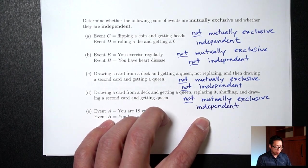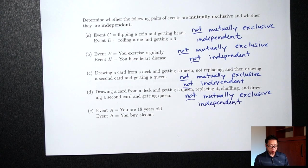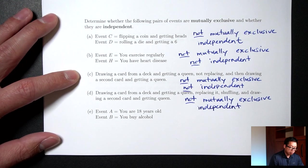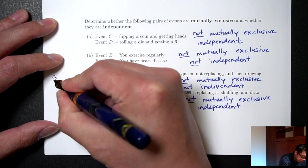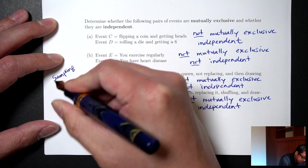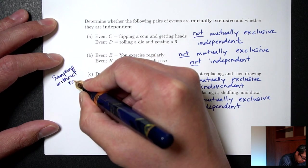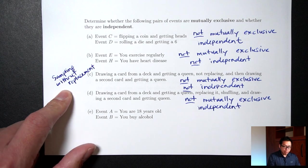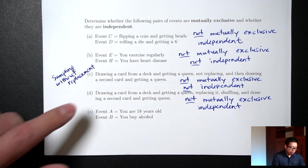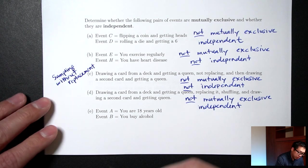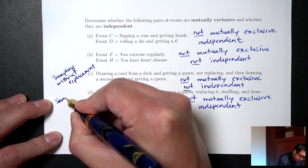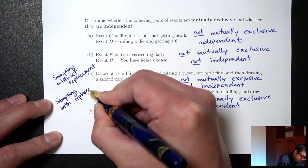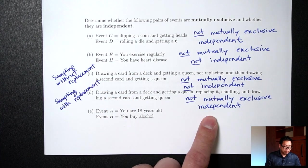These two examples are important in statistics. Part C — picking without putting the card back — is called sampling without replacement, and it's important to realize that sampling without replacement is not independent. Part D — picking and then putting it back and reshuffling — is called sampling with replacement, and sampling with replacement means they are independent.